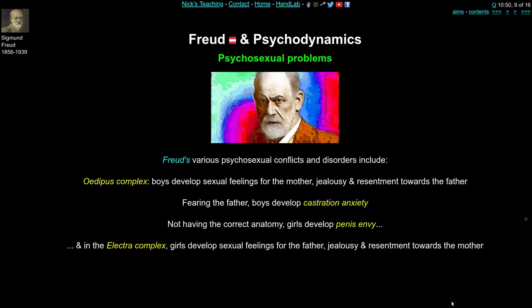All these forces interacting and pushing us around create psychosexual conflicts and disorders. The Oedipus complex holds that boys develop sexual feelings for their mother and jealousy and resentment towards their father. Boys would then fear their father might castrate them — castration anxiety. Similarly, girls, not having a penis, would develop penis envy and possibly the Electra complex — sexual feelings for their father and jealousy towards their mother. This is all, apparently, common sense.